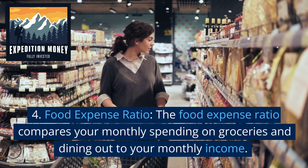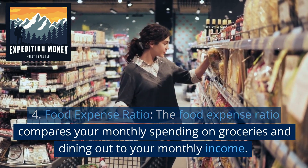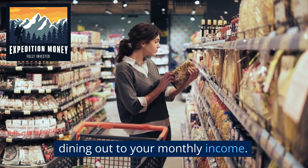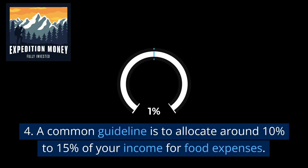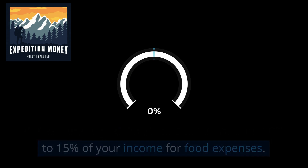Food Expense Ratio. The Food Expense Ratio compares your monthly spending on groceries and dining out to your monthly income. A common guideline is to allocate around 10% to 15% of your income for food expenses.